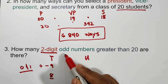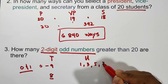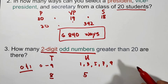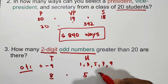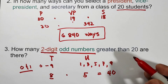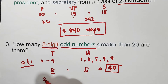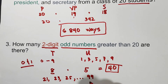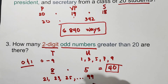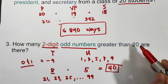For the units digit, since we need odd numbers, the last digit must be 1, 3, 5, 7, or 9 — giving us five choices. Using the fundamental counting principle, we multiply eight times five, which equals 40. So there are 40 two-digit odd numbers greater than 20, starting from 21, 23, 25, up to 99.